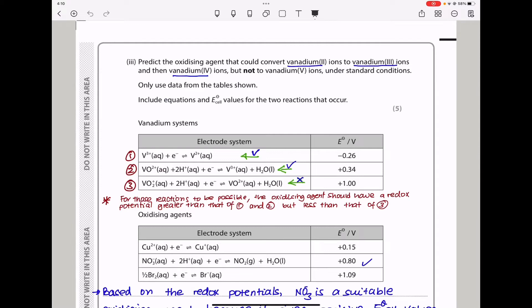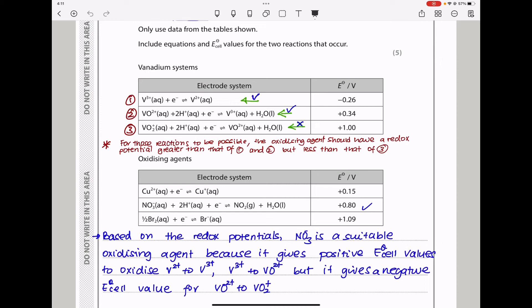Moving on. Here they say, predict the oxidizing agent that could convert vanadium 2 ions to vanadium 3 ions, and then vanadium 4 ions, but not vanadium 5 ions under standard conditions. They say, only use the data from the table shown, include equations, and E cell values for the two reactions that occur. So, based on this information, we have to convert vanadium 2 to vanadium 3, and we have to convert vanadium 3 to vanadium 4. However, this reaction should not occur.